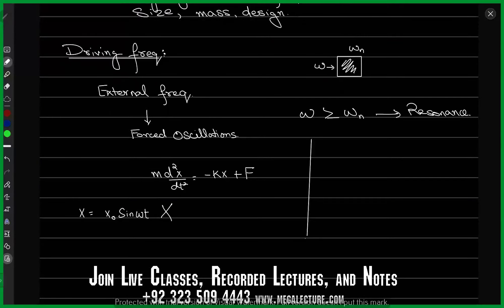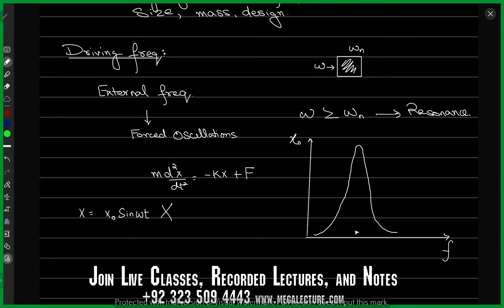I'll show you a graph between frequency and the amplitude of oscillations for the resonance case. If frequency is on the horizontal axis and amplitude x naught is on the vertical axis, the graph looks like a sharp peak. The amplitude is maximum when the driving frequency equals the natural frequency — that's when all the disasters can happen: collapse of buildings and so on. This graphical representation as a sharp peak curve is characteristic of all resonance phenomena.